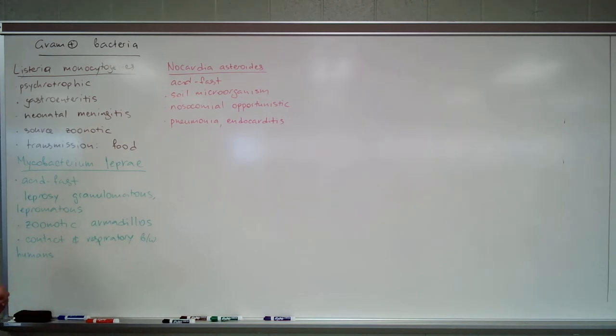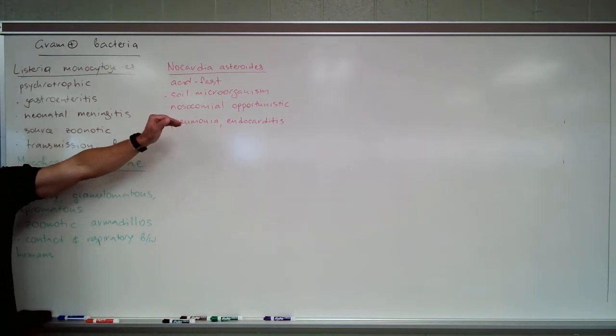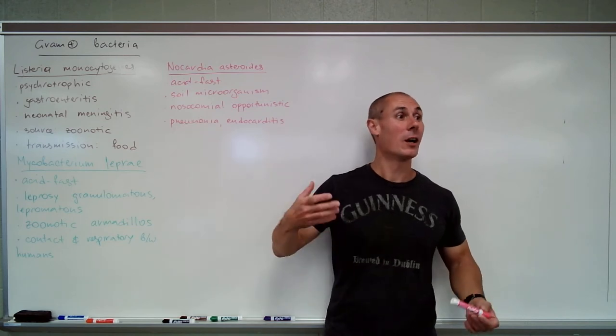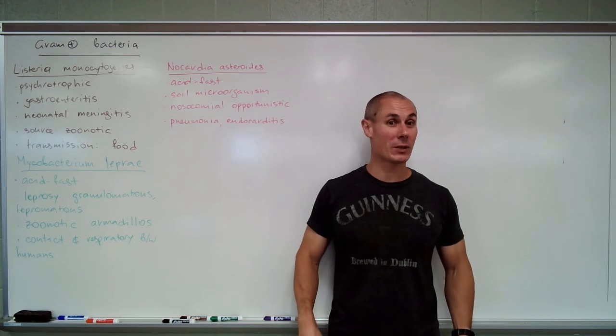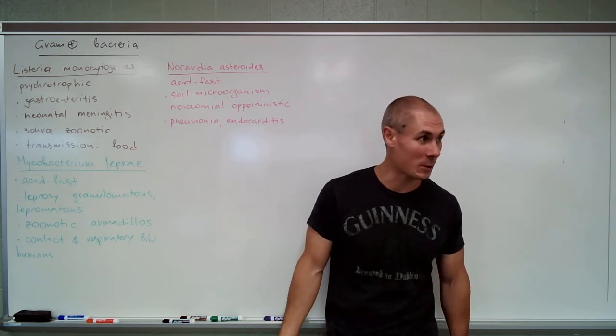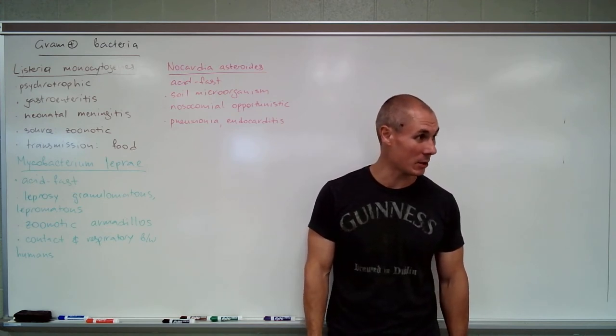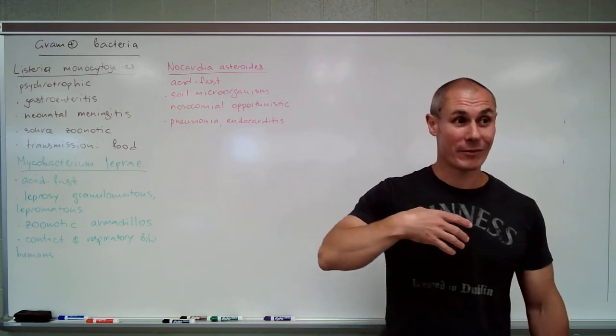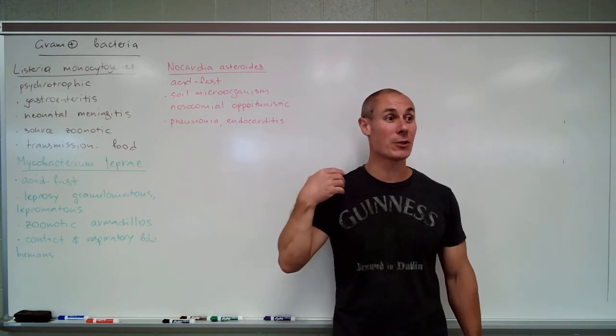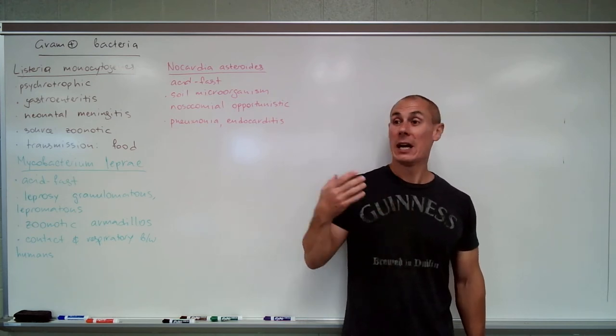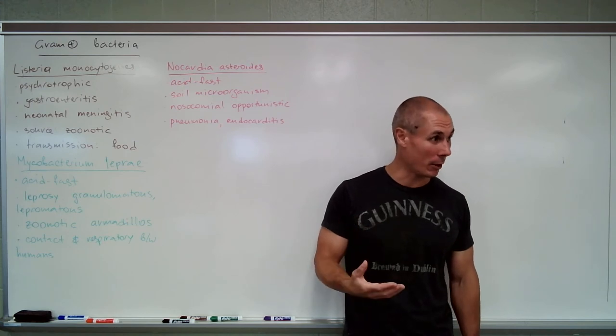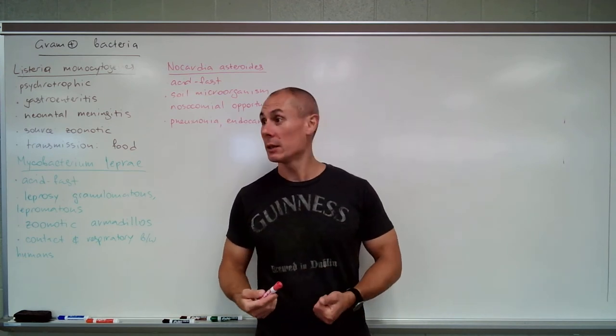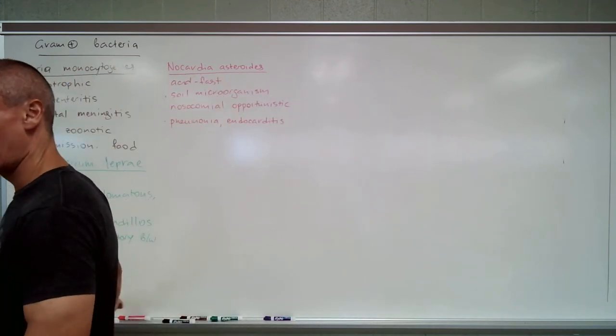Take a look at this: Nocardia asteroides is transmitted in nosocomial settings - hospitals - and it's opportunistic, which means it infects immunocompromised people who are already in the hospital. On top of that, pneumonia is infection of a sterile space - a lung - and endocarditis is infection of a sterile space - a heart. This illustrates that your sterile sites are more susceptible to infection compared to ones that have microbiome.